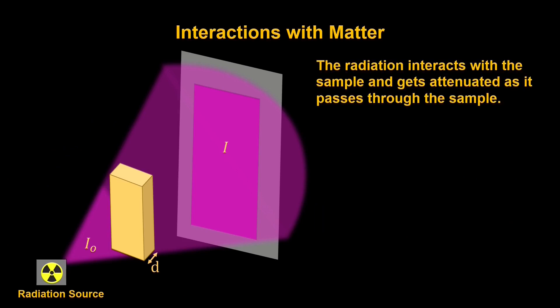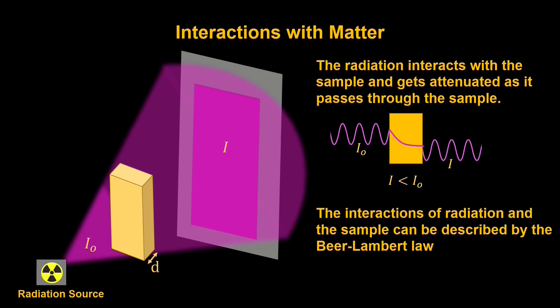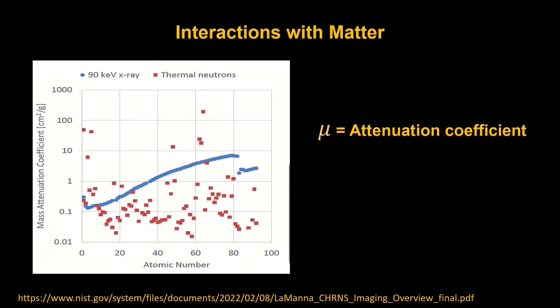When the radiation goes through the sample, it's attenuated and therefore loses intensity. And this relationship between the initial intensity and the final intensity and the interaction with the radiation in the sample can be described by the Beer-Lambert law, which is I is equal to I0 multiplied by E to the negative mu d, where mu is our attenuation coefficient.